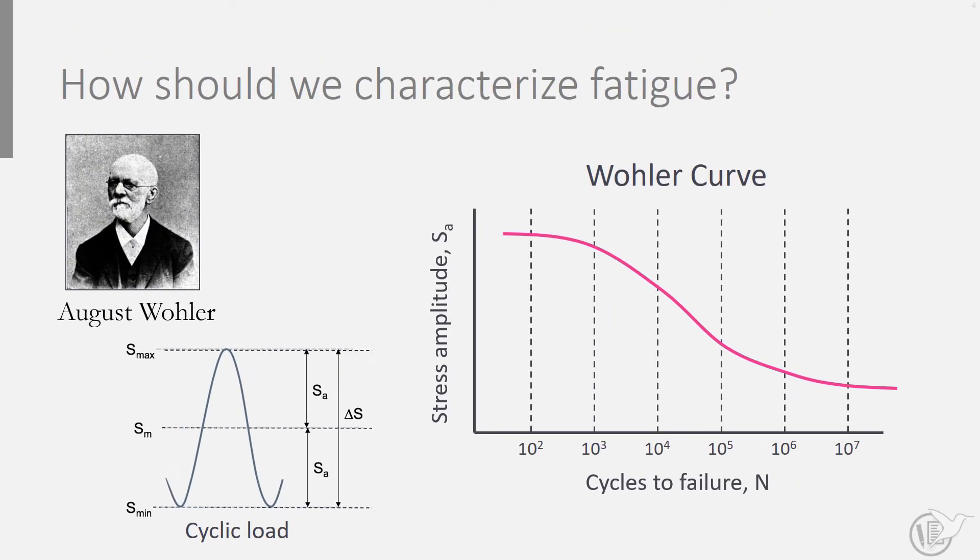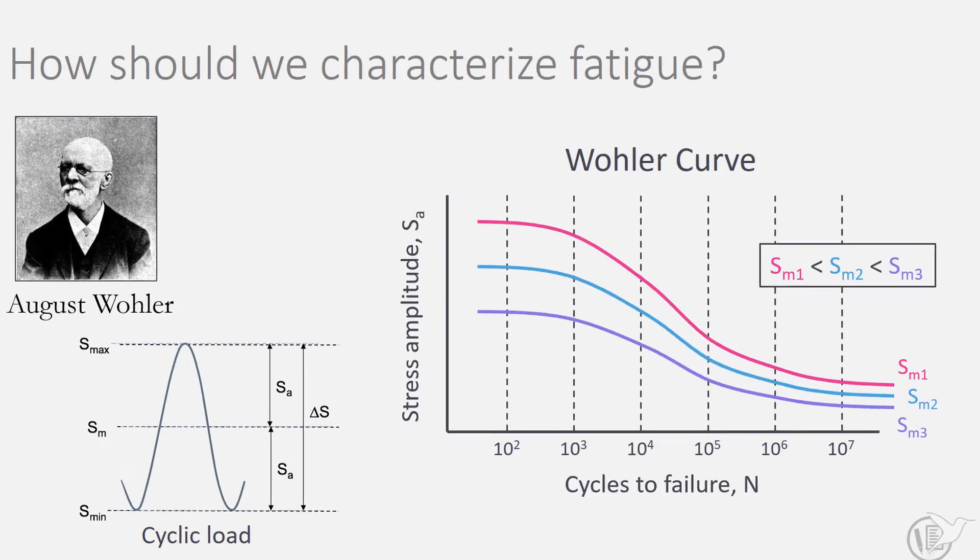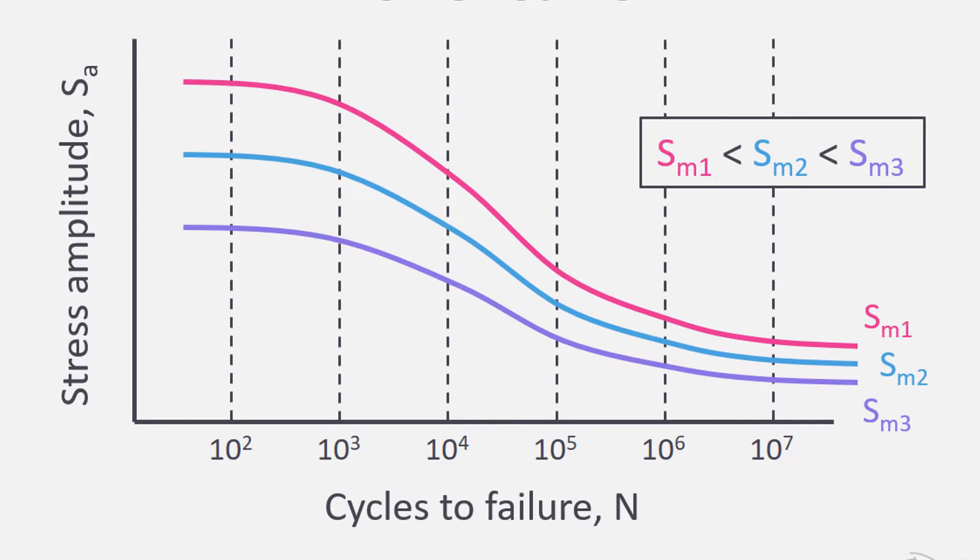Because one can think of many combinations of mean stress and stress amplitude, these Wöhler curves, or S-N curves, are generally plotted for a specific mean stress. So the curves illustrated here each relate to a certain mean stress, and they illustrate how life increases if the stress amplitude is decreased. The higher the curve, the lower the mean stress.